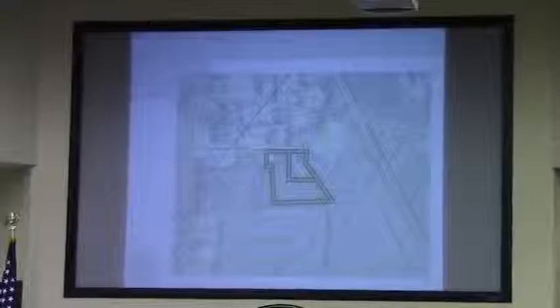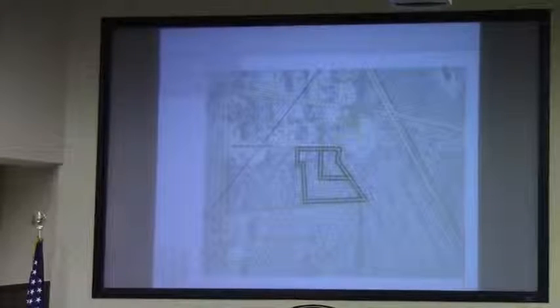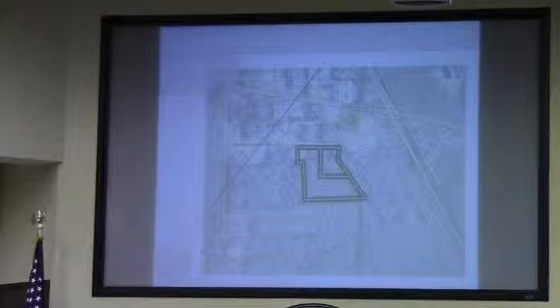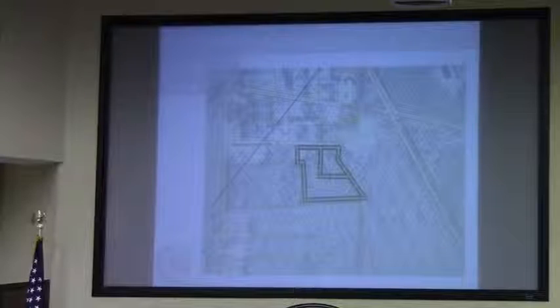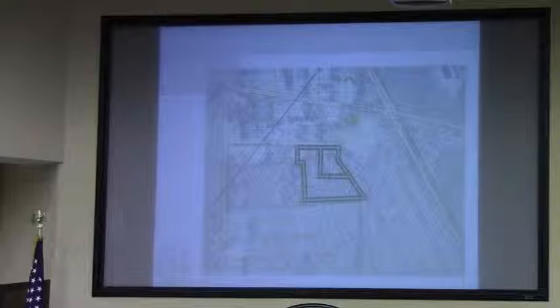The applicant in this case is requesting this because he wants to take the existing manufactured house on the property and replace it. When he goes through replacement, there's different conditions he has to meet, one of which is to have the house on its own piece of property. So a subdivision is necessary and that's why we're here because he needs the zoning to do this.